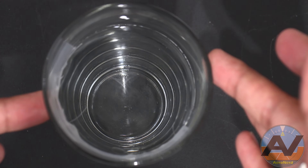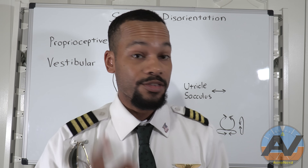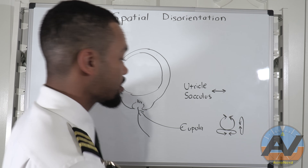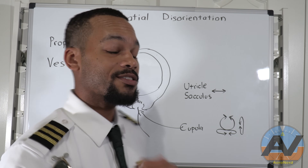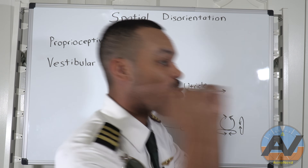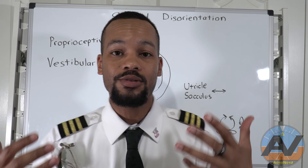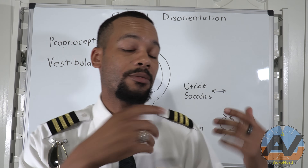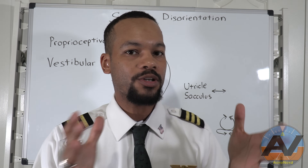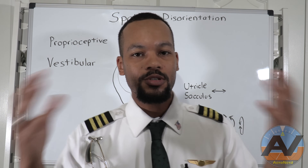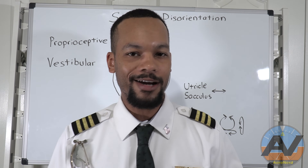That's just the cupolas. Now we're going to talk about the utricle and the saccule. This senses forward and back movement and it relates to your somatogravic illusion. We'll talk about ICE FLAGS in a bit, but before we go into ICE FLAGS, I really want you to understand this part. For those of you who don't know what ICE FLAGS is, don't worry — you'll know all about it in a second.